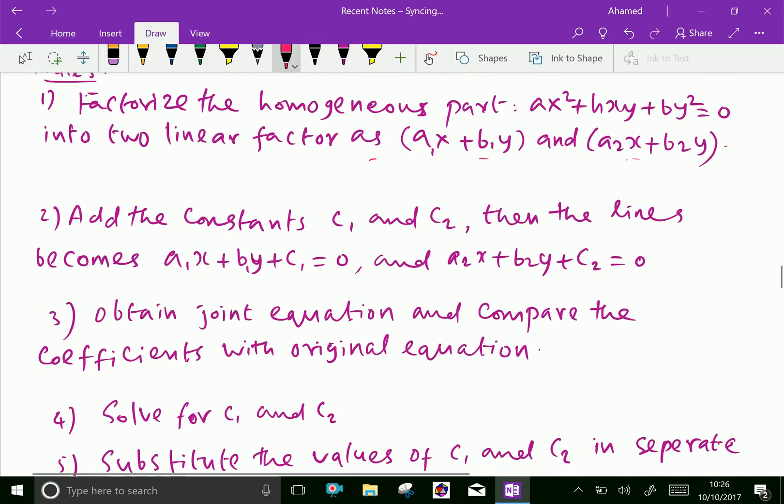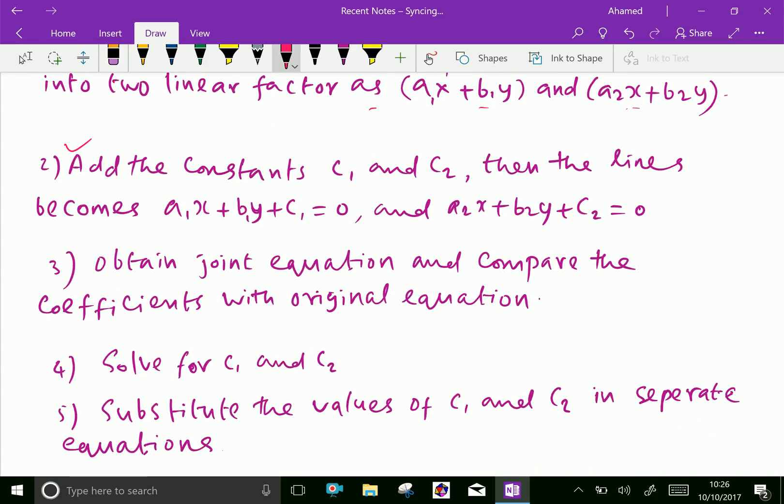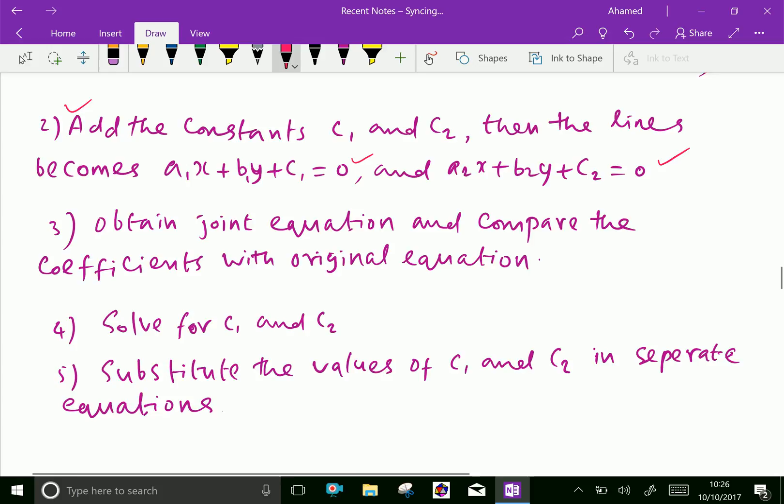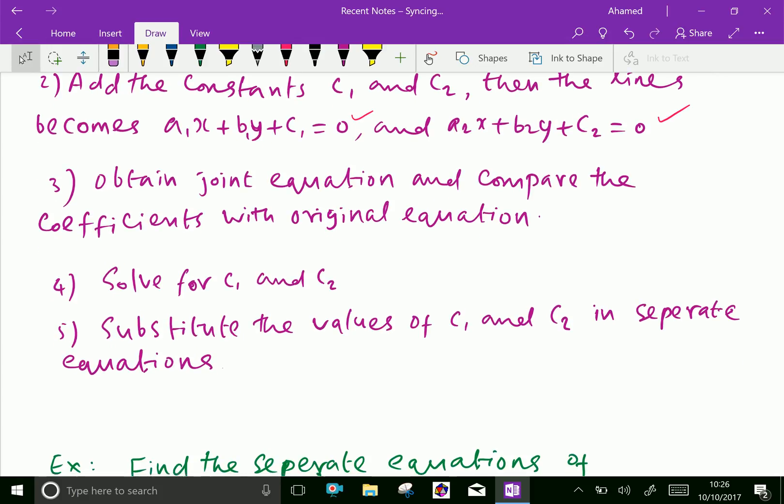Second, add the constants c1 and c2, then the lines become a1x plus b1y plus c1 equal to zero and a2x plus b2y plus c2 equal to zero. Third, obtain joint equation and compare the coefficient with original equation.